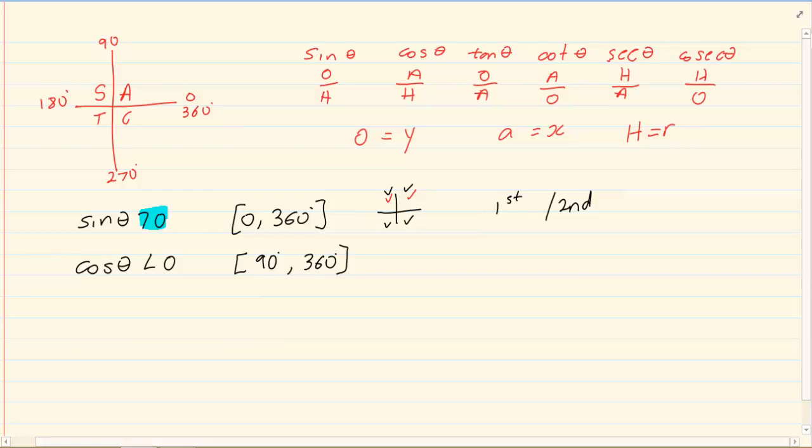Again, we work with our small Cartesian plane. We know that cos is less than 0, which means that I am in the second and third, because cos is greater than 0 in the first and the fourth. Then I am working from 90 to 360, which is second, third and fourth.